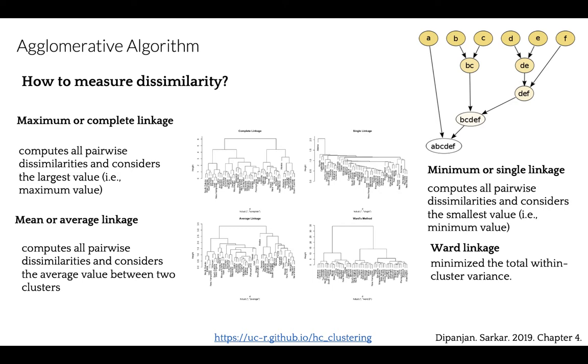Let's look first at maximum or complete linkage clustering. It computes all pairwise dissimilarities between the elements in document 1 and elements in document 2, and considers the largest value, the maximum value. It tends to produce more compact clusters, as you can see in the figure.